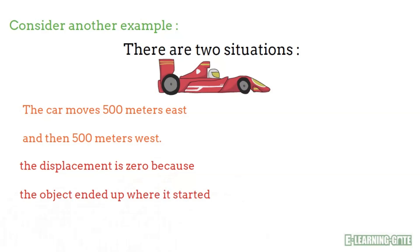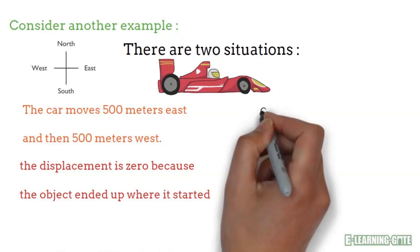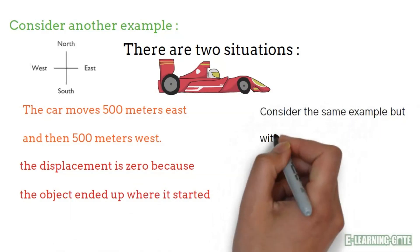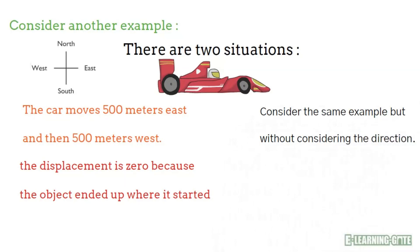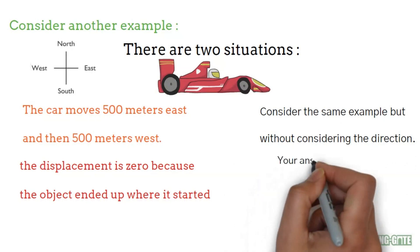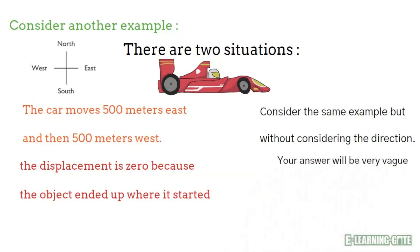Now consider for the same car the second situation, that is, consider it without direction. In this case, your answer will be vague. In other words, you cannot find the final location of the car precisely.